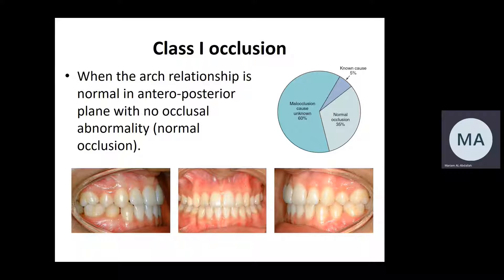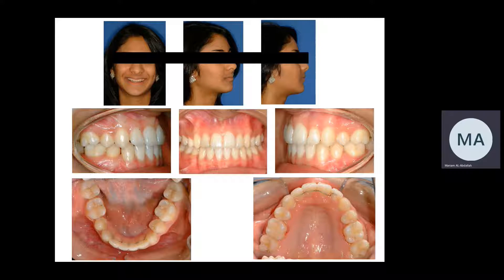We're going to start with class 1 occlusion — not malocclusion, occlusion. This is when the anterior-posterior relationship is within average and there is no or minimal occlusal abnormalities within the arches. If this is the case, it's considered a normal occlusion. Normal occlusion accounts for about 35% of the population; the remaining 65% will have some sort of malocclusion. This is an example of a patient with class 1 incisors, class 1 molars, and canines — class 1 occlusion with no or minimal disturbances.